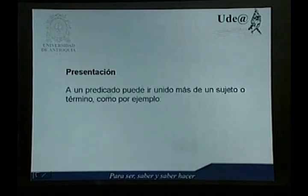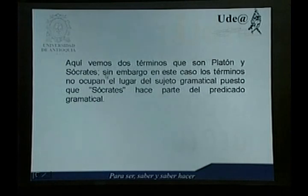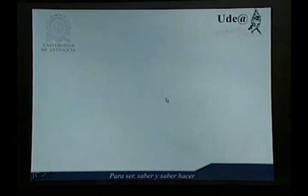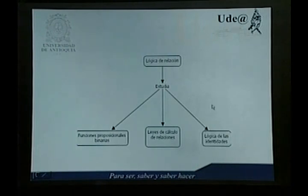A un predicado puede ir unido más de un sujeto o término, como por ejemplo, Platón fue alumno de Sócrates. Este tipo de predicados expresa una relación entre los objetos o términos, en este caso entre Platón y Sócrates. Aquí vemos dos términos que son Platón y Sócrates; sin embargo, los términos no ocupan el lugar del sujeto gramatical, puesto que Sócrates hace parte del predicado gramatical. El estudio de este tipo de expresiones es el objetivo del módulo, que se complementa con el estudio de la llamada Lógica de la Identidad, la cual proporciona otra serie de reglas para el estudio de expresiones cuantificadas. El mapa conceptual de este módulo nos indica que se estudiarán funciones proposicionales binarias, leyes del cálculo de relaciones, y la lógica de la identidad.